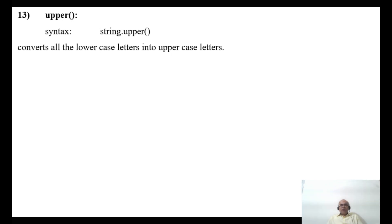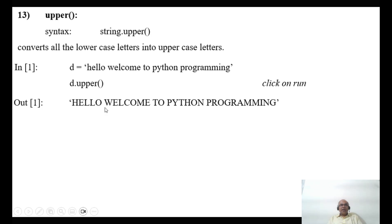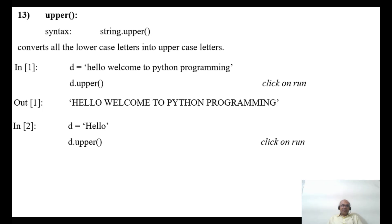Next is the upper function. It converts all lowercase letters into uppercase letters. For example, d = 'hello welcome to python programming', and calling d.upper() converts all characters to capital letters: 'HELLO WELCOME TO PYTHON PROGRAMMING'. Even if only some letters are lowercase, they all get converted to uppercase.